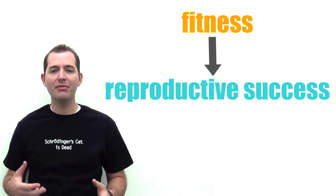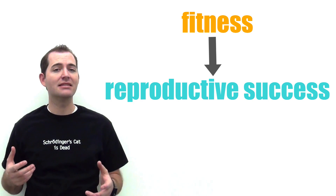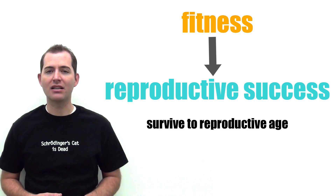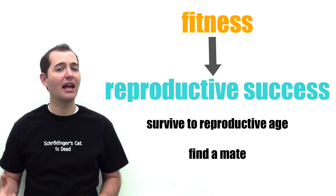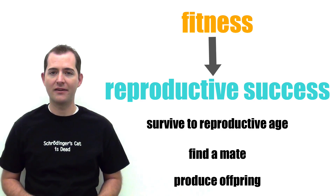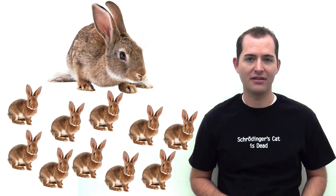Fitness can be described as the ability to survive to reproductive age, find a mate, and produce offspring. The more offspring an organism or a species has, the more biological fitness they have.